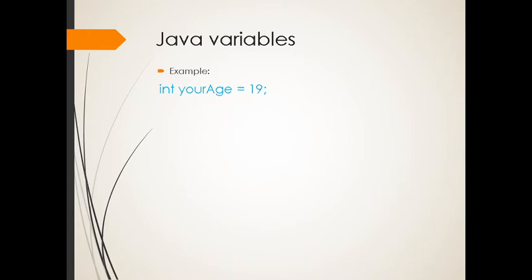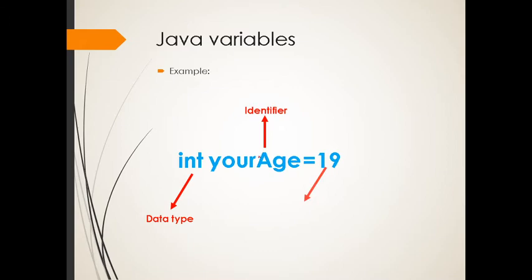If we make that one bigger, this is the data type. This is yourAge, the identifier or variable name. You also have the value. And don't forget the semicolon. Let's proceed.